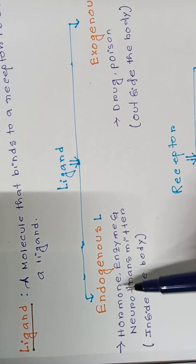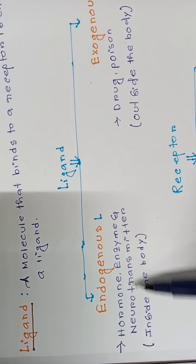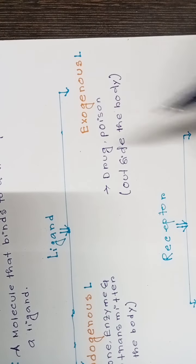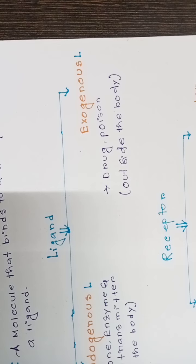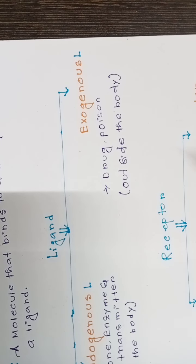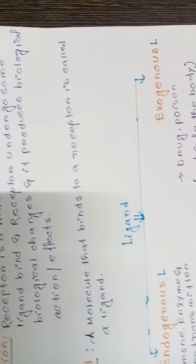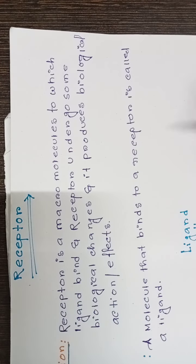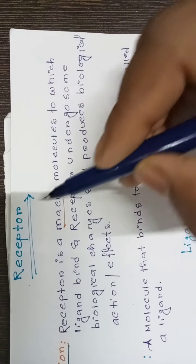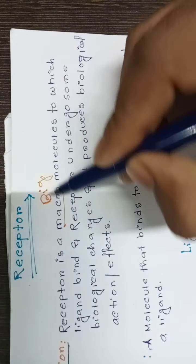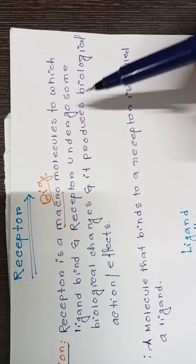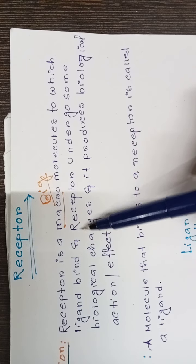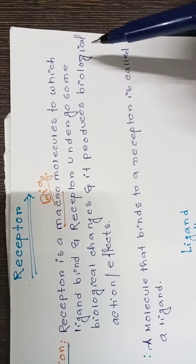Examples of endogenous ligands: hormones, enzymes, and neurotransmitters. Exogenous ligands include drugs and poisons — things we take from outside. Now, the definition of receptor: a receptor is a macromolecule — a big molecule — to which a ligand binds.